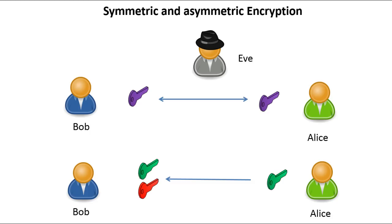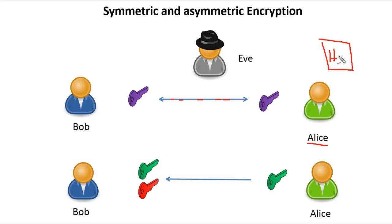To understand the TLS encryption process, we need to look at the difference between symmetric and asymmetric encryption. Let's say Alice wants to send a message to Bob over an unsecured wire. Alice takes the message — in our case just 'hi' — and encrypts the text with a pre-agreed symmetric key.